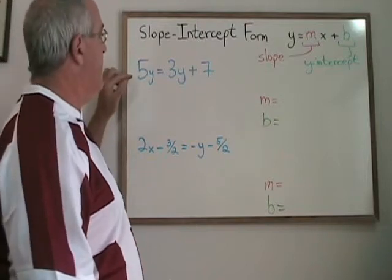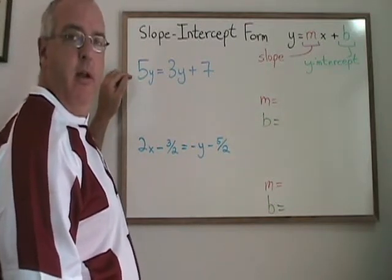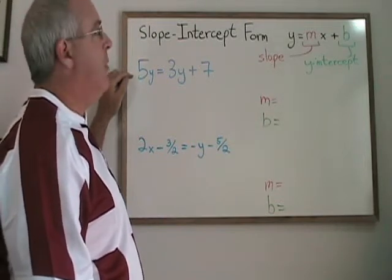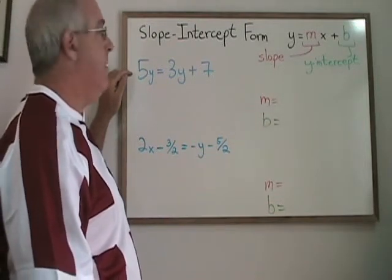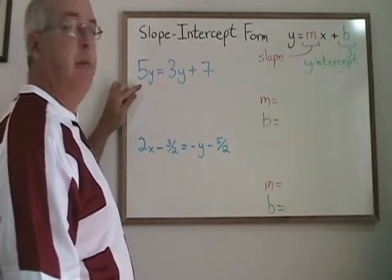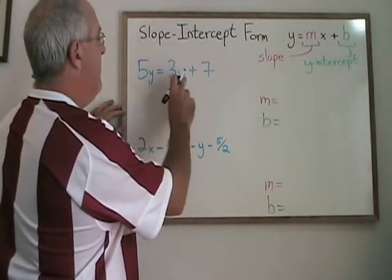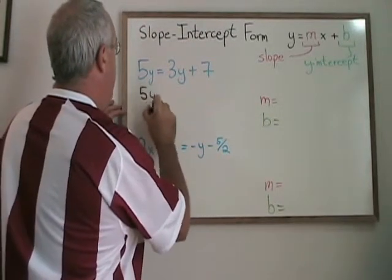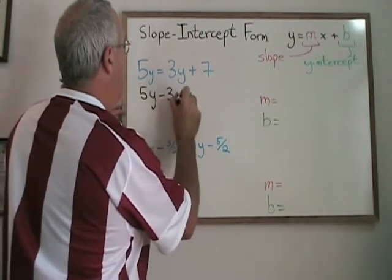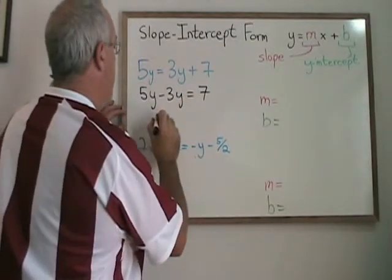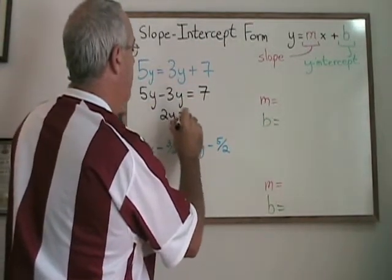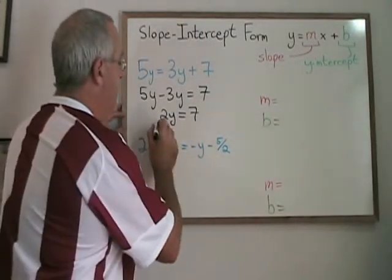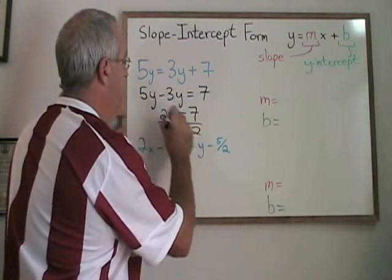In this next example, we have a horizontal line. The equation has y's but no x's. But we can still use the y equals mx plus b form to find the slope and y-intercept of this line. Doing some algebra, I move the 3y to the left of the equals. I end up with 5y minus 3y equals 7. 5y minus 3y, of course, is 2y. Now I have 2y equals 7. If I divide both sides by 2, my y is isolated.